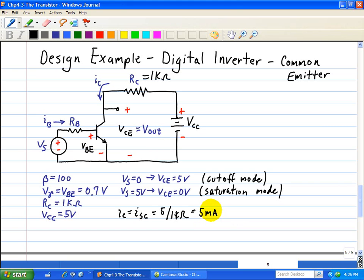We also know that in the saturation mode, Vbe is equal to V gamma, which is equal to 0.7 volts. However, what we don't know is the value of RB so that this transistor will be in saturation mode.